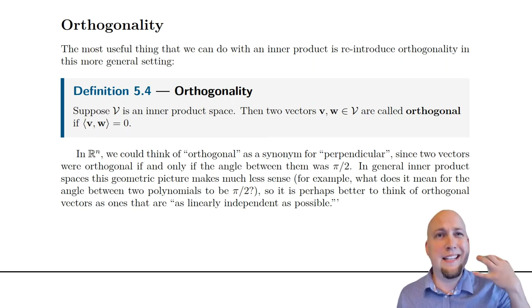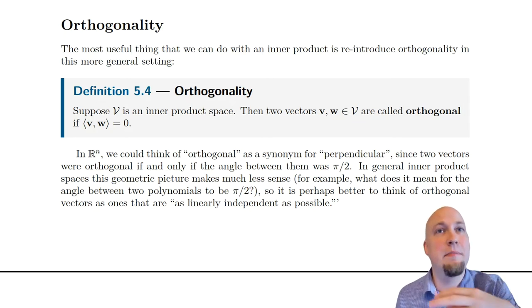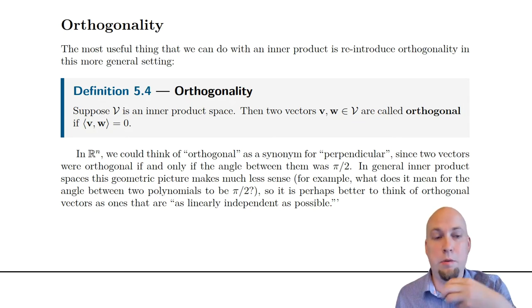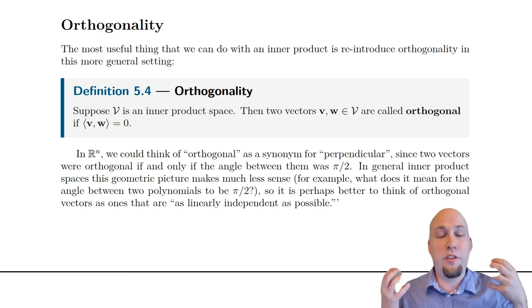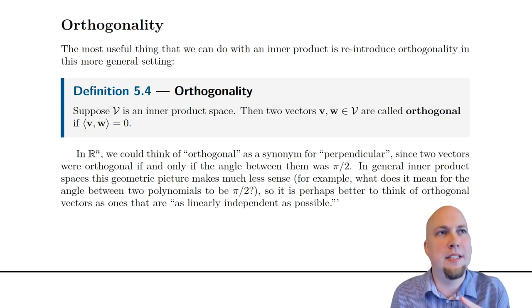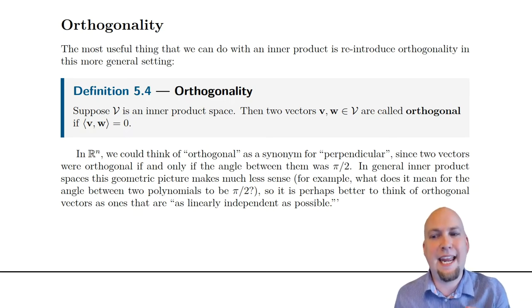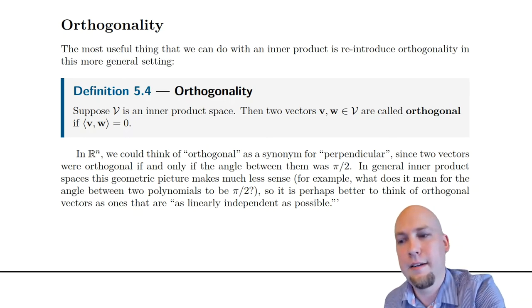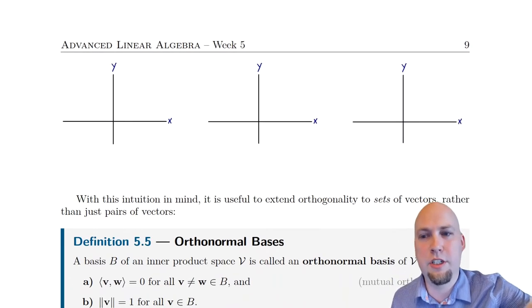The intuition is the same as it was back in R^n when we were doing dot products. If vectors are orthogonal to each other, that sort of means they're as independent as possible in a sense. They're sort of pointing as far away from each other as they can. So let's draw a picture here to try to pin down this intuition.